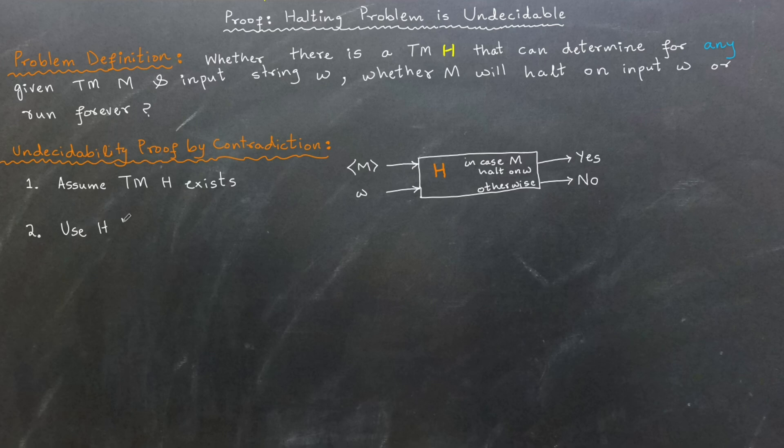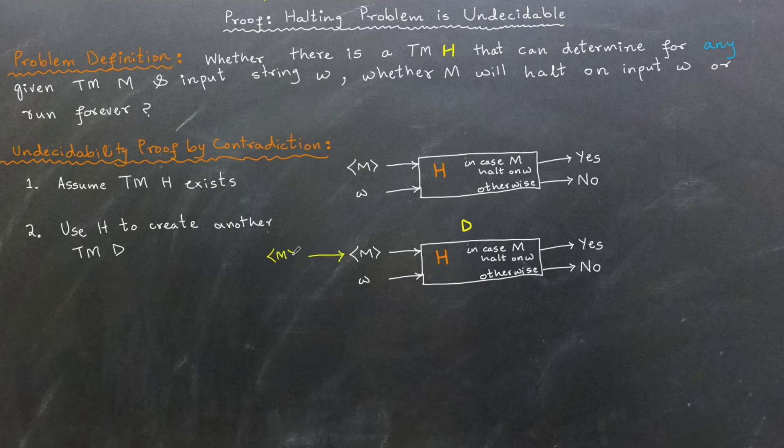Now, let's use H to create another Turing machine D. Like H, D also takes two inputs: the description of Turing machine M and input string W. However, instead of processing any arbitrary input W, D is specifically designed to take M's own description.